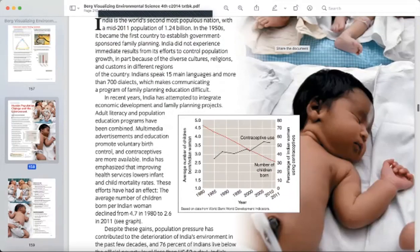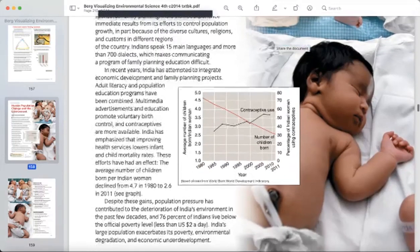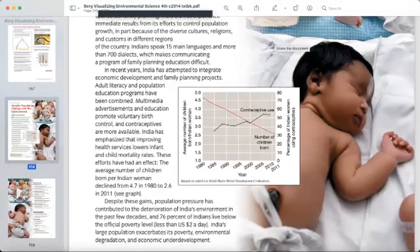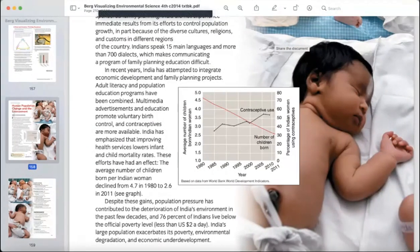In recent years, India has attempted to integrate economic development and family planning projects. Adult literacy and population education programs have been combined. Multimedia advertisements and education promote voluntary birth control and contraceptives are more available. India has emphasized that improving health services lowers infant and child mortality rates. These efforts have had an effect.